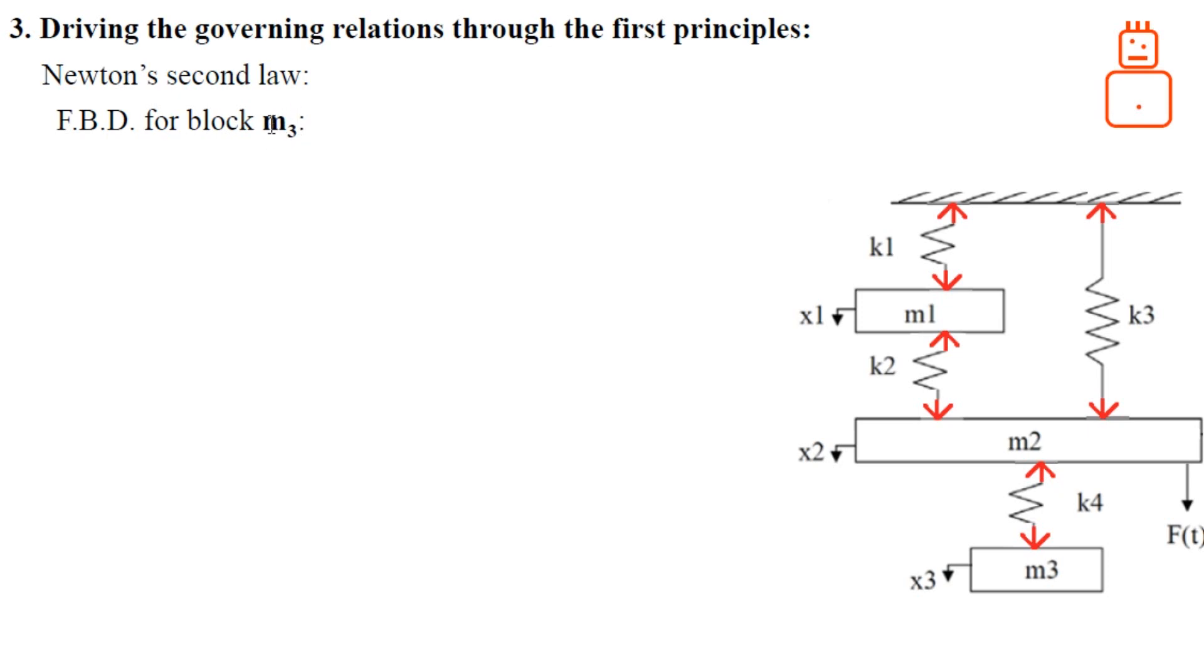Starting with m3, m3 is affected only by the inertia of its mass and the force coming from the spring. The force, as you can see here, is in tension so it will be the opposite side for m3. The value of the force from this spring is k4 multiplied by the difference between x3 and x2.